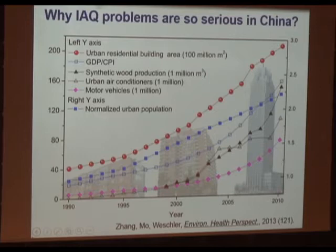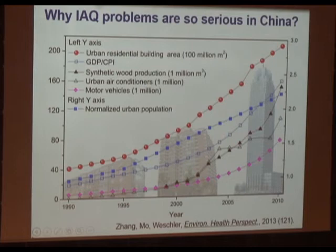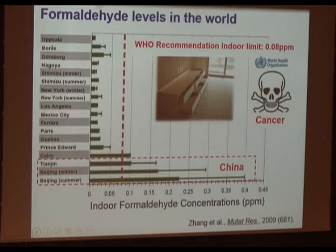Why are indoor air quality problems so serious in China? Because of the rapid urbanization and modernization of urban China. This is a curve of urban residential building area increase — in the past two decades it increased a lot. And synthetic wood production also increased a lot. Because of that, in new buildings we use a lot of new building materials and furniture.